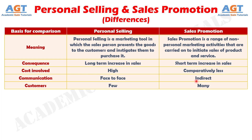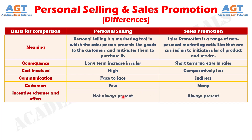Number five: in personal selling the market size is small and that is why there are few customers only. Whereas, in sales promotion, the market size is large, so there are an end number of potential customers. Number six: the major tool of sales promotion is the incentive schemes and offers, but these tools are not used in the case of personal selling.